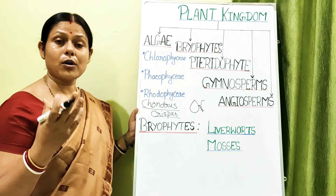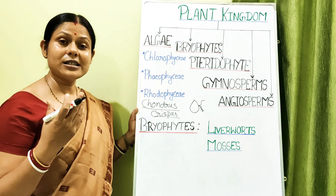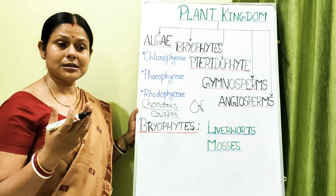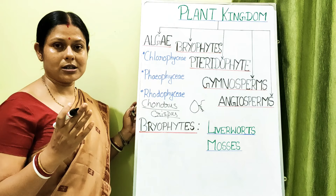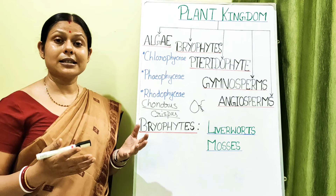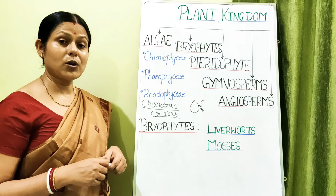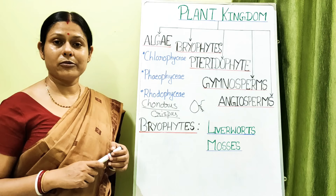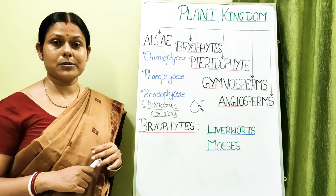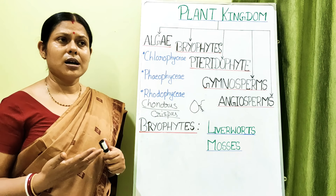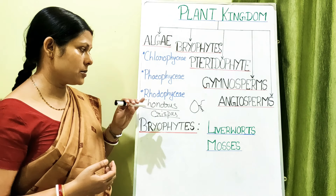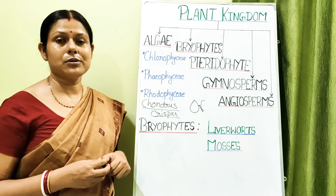Carrageenan helps in making chocolate milk — it prevents the chocolate from settling. It is also used in the preparation of soups. Another red alga, Porphyra, is shown in your textbook. Chondrus crispus is also used in making soups — various food items are prepared using Rhodophycean algae.